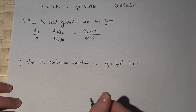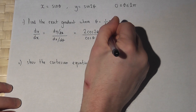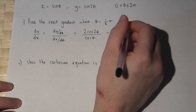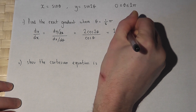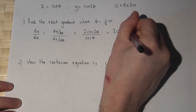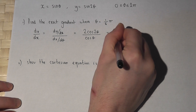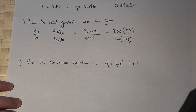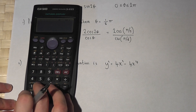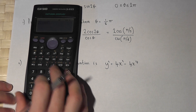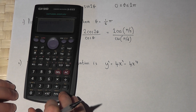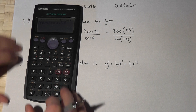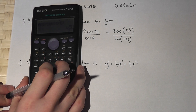So to find the exact gradient when theta is pi over 6, we replace theta by pi over 6. At pi over 6, we get 2 lots of cos of 2 times pi over 6, which is pi over 3, all divided by cos of pi over 6. We can use a calculator: 2 cos of pi divided by 3, divided by cos of pi divided by 6, and we get 2 root 3 over 3.